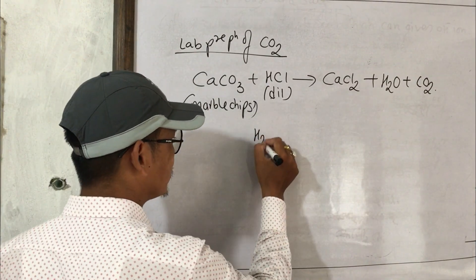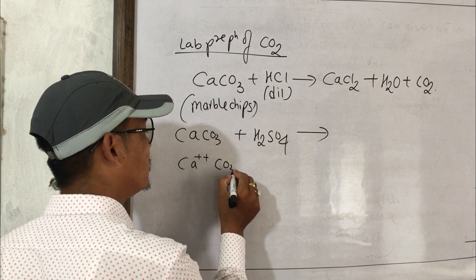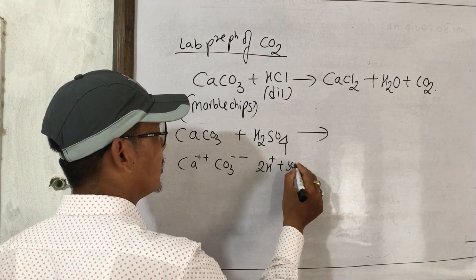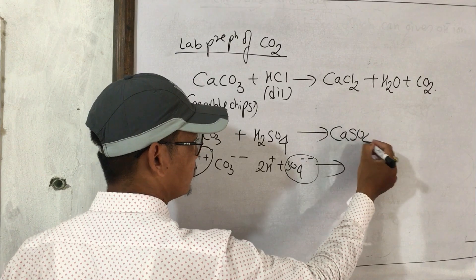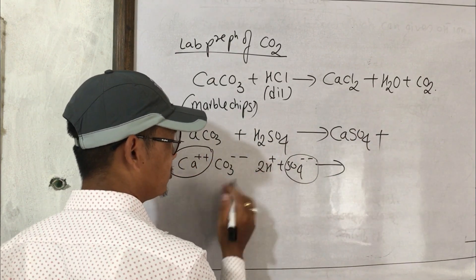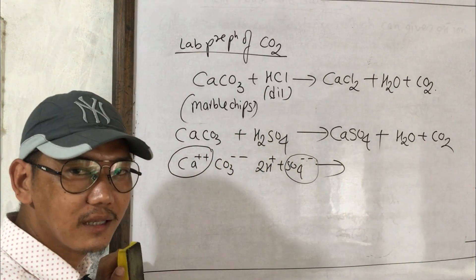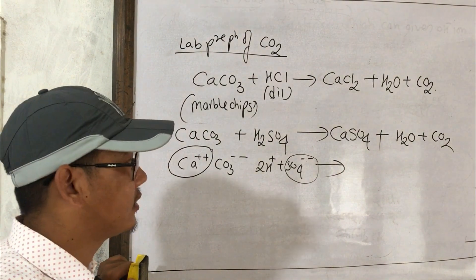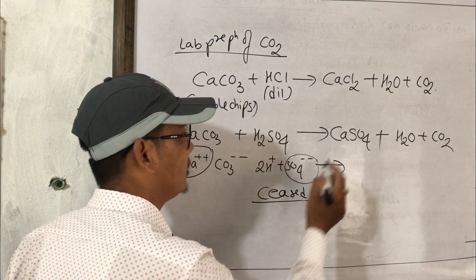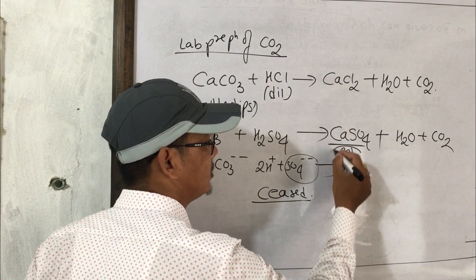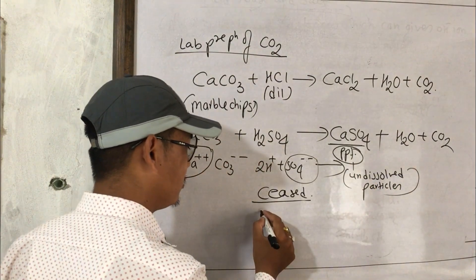We do not use H₂SO₄ in the lab preparation of CO₂. When H₂SO₄ reacts with CaCO₃, Ca²⁺ + SO₄²⁻ combine to form CaSO₄, which is an insoluble precipitate (PPT). Because CaSO₄ is insoluble, it does not dissolve, and the reaction stops after some time — CO₂ production ceases.